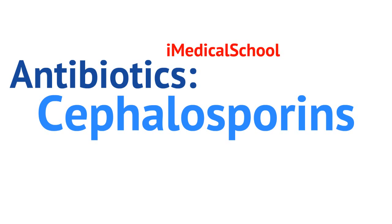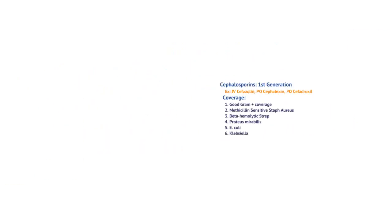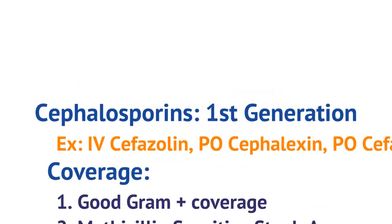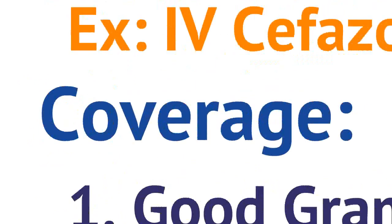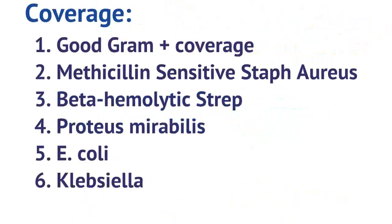Let's focus on your first generation cephalosporins. Examples include cefazolin, cefalexin, and cefadroxil. In terms of coverage, first gen cephalosporins provide good gram-positive coverage. Specifically, they cover methicillin-sensitive Staph aureus. In addition, they cover beta-hemolytic strep, Proteus, E. coli, as well as Klebsiella.